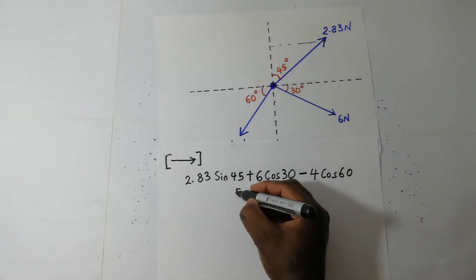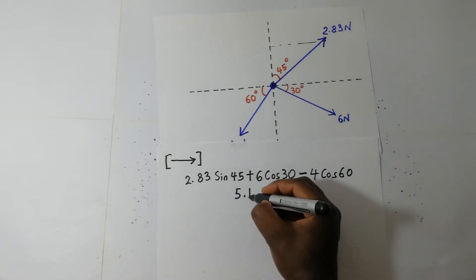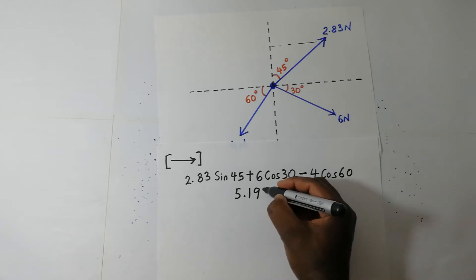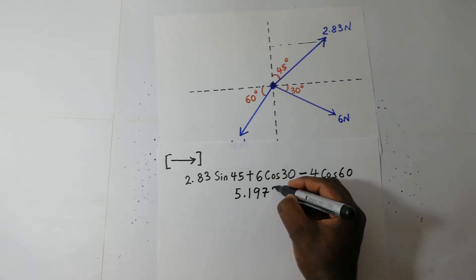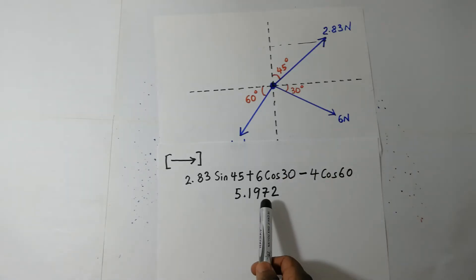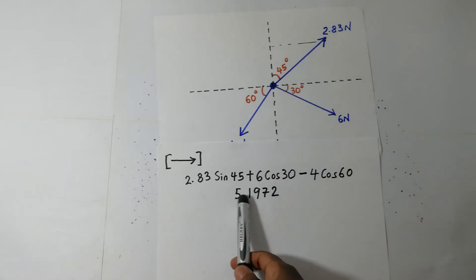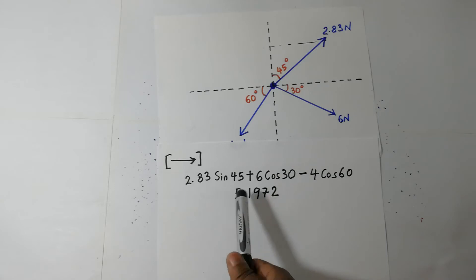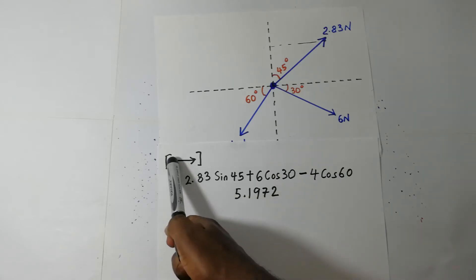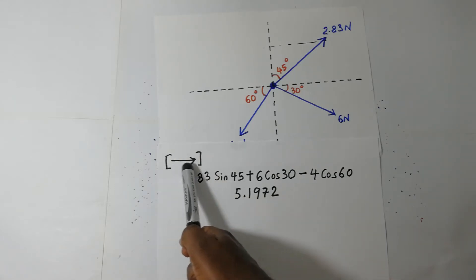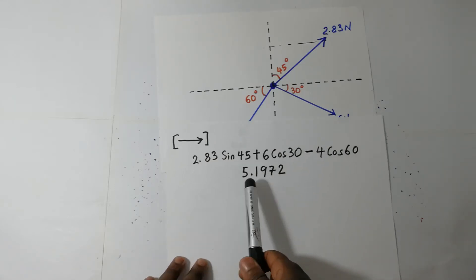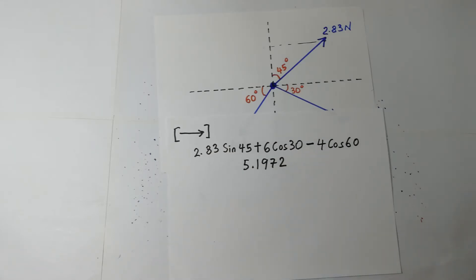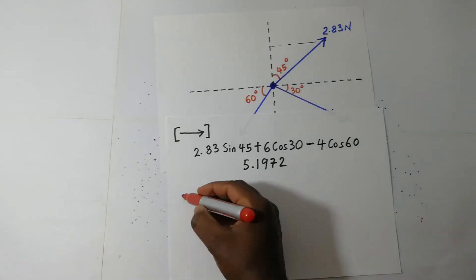When we compute this, we shall get 5.1972. So now that we have resolved and gotten the component of all the forces in the X axis, let's go and find the component of all the forces in the Y axis.